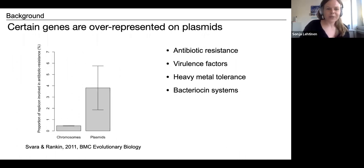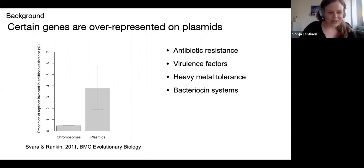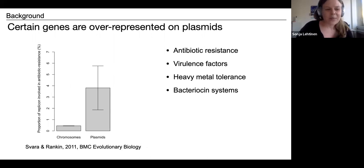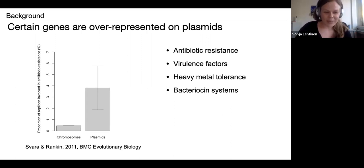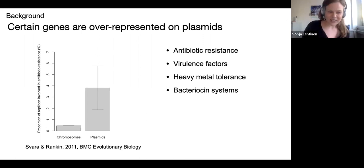The work here was motivated by this observation that there seems to be a trend in the types of genes that are present on plasmids versus the chromosome. Here, for example, I'm showing you data on the proportion of chromosomes versus plasmids — the proportion of DNA on chromosomes versus plasmids — that code for antibiotic resistance genes, and it seems that there is indeed this effect where antibiotic resistance is over-represented on plasmids.